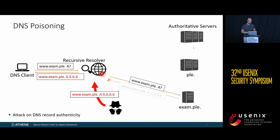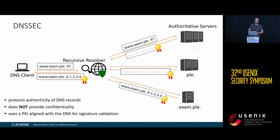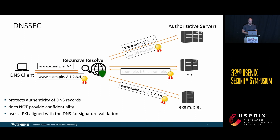One very prominent attack in this scenario is DNS cache poisoning, which is an attack on DNS record authenticity. To prevent that, there's DNSSEC, which protects the authenticity of DNS records. It does not provide confidentiality, and it uses a PKI aligned with the DNS hierarchy for signature validation.